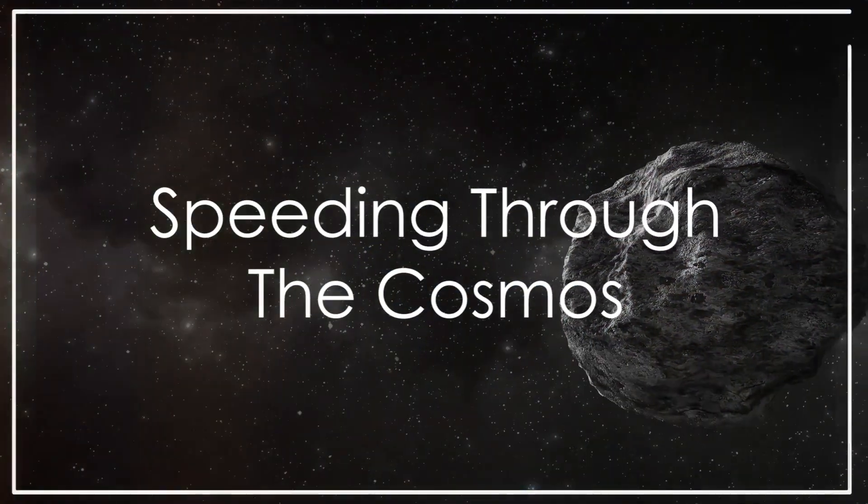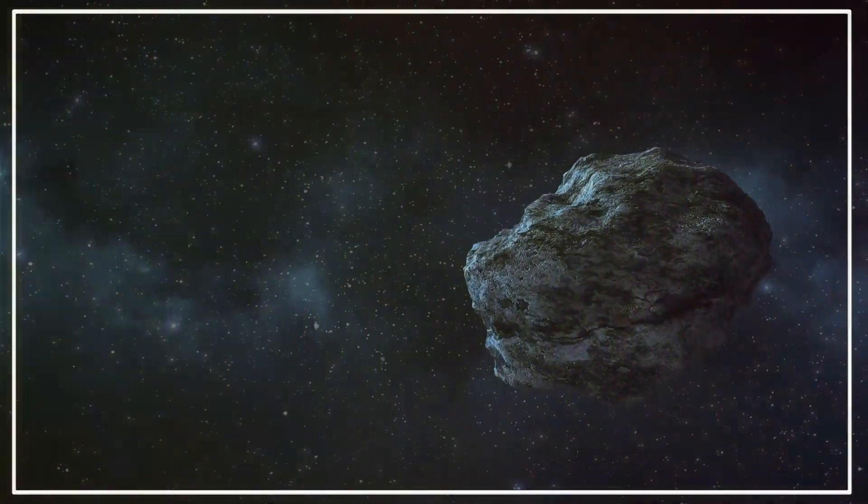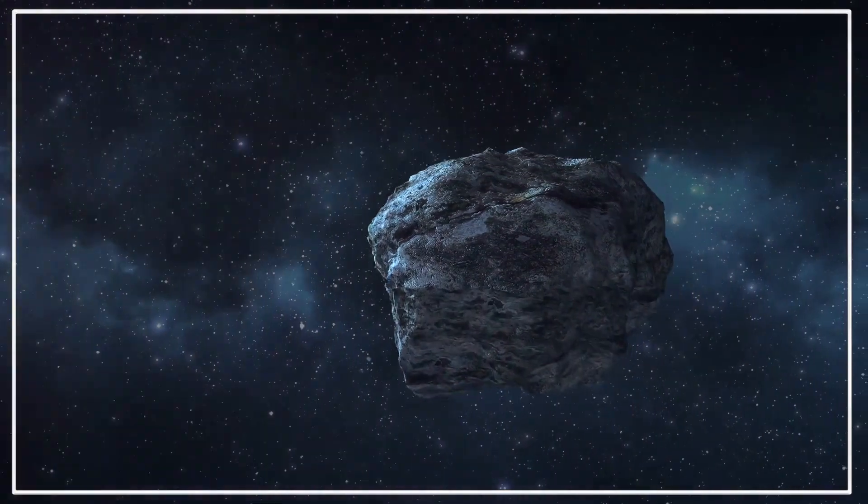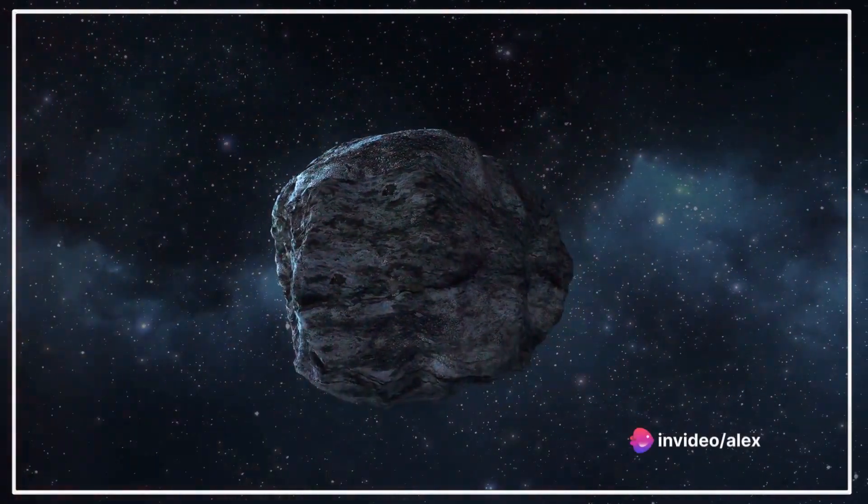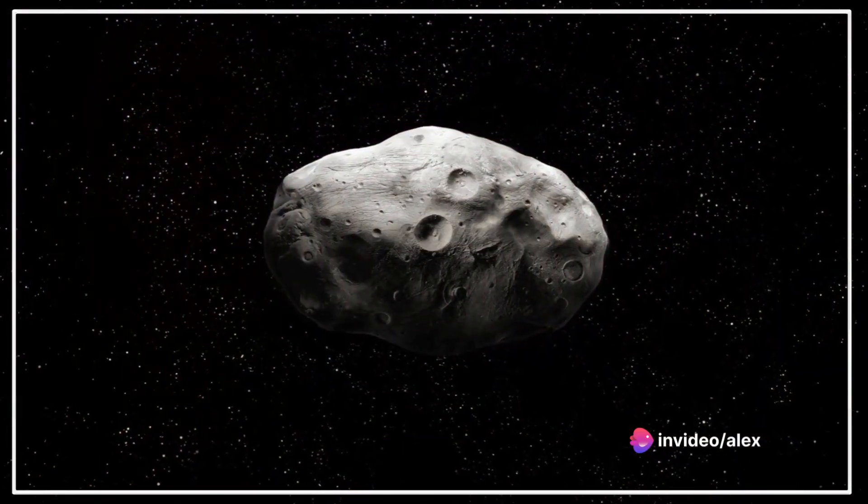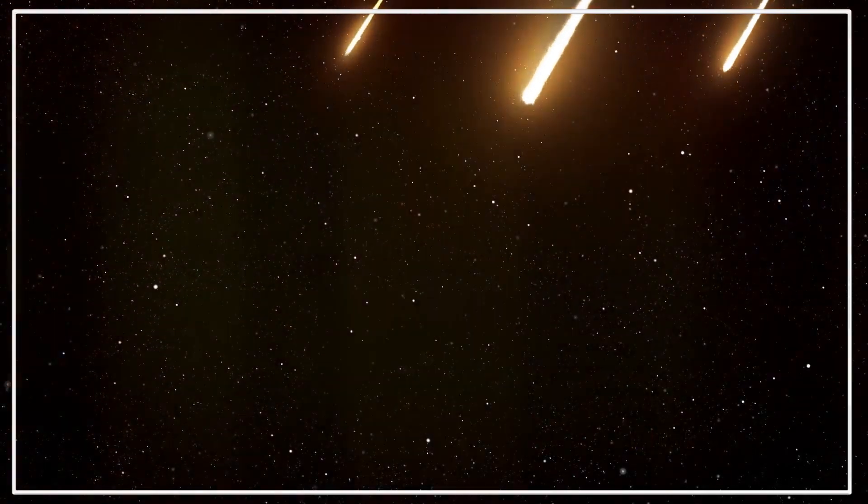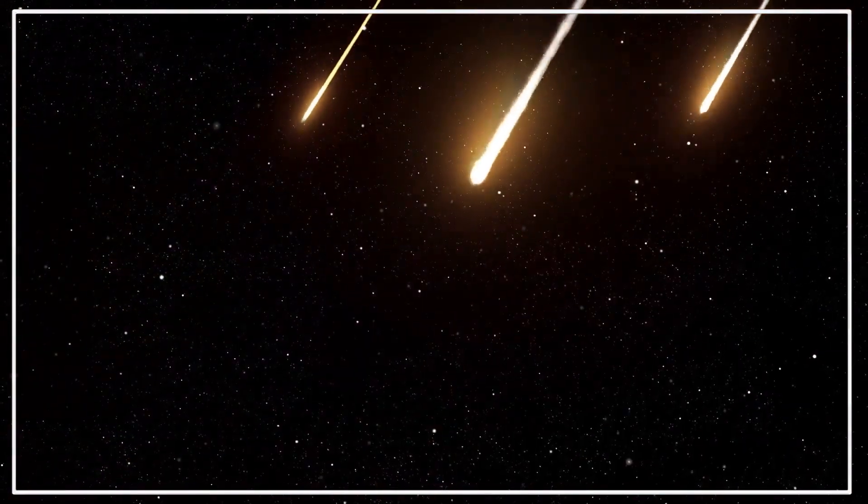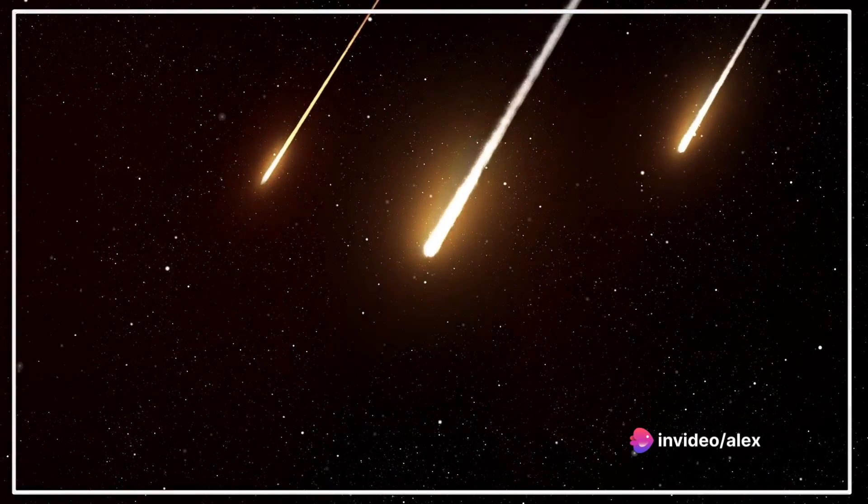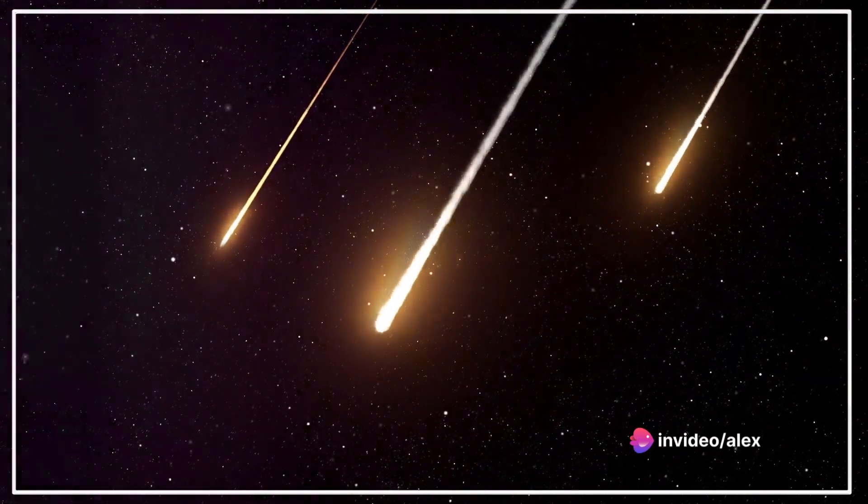Imagine a one-pound asteroid hurtling towards Earth at the speed of light. In the vast expanse of the cosmos, this hypothetical scenario unfolds. This asteroid, no heavier than a loaf of bread, races towards us at a speed so immense it would circle the Earth seven and a half times in a single second.